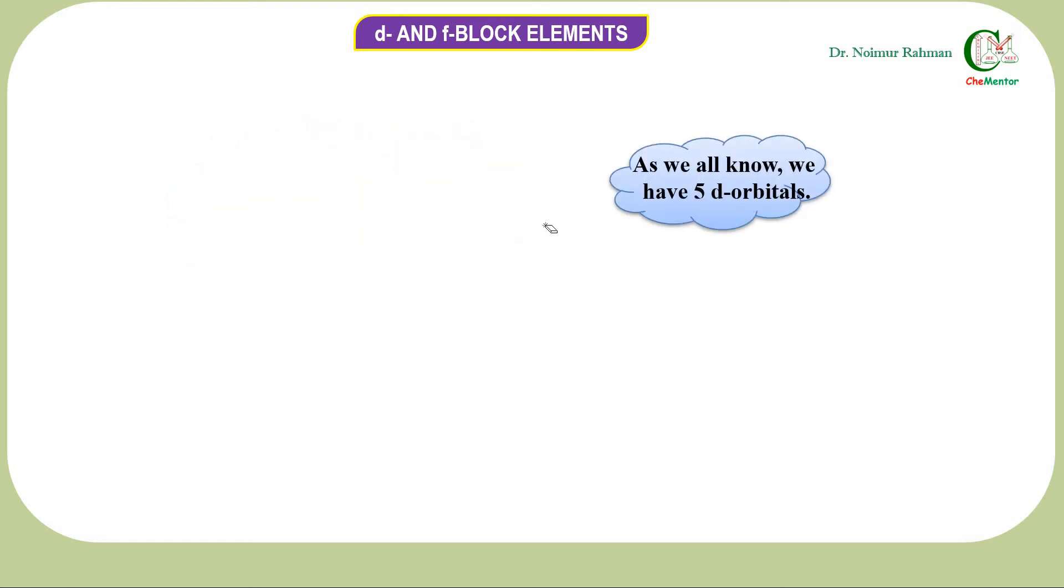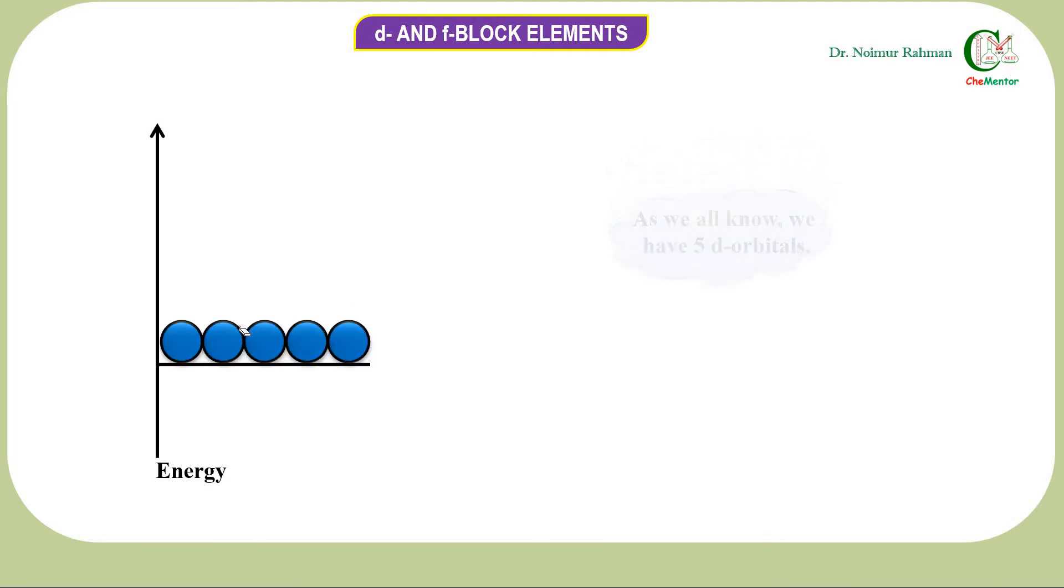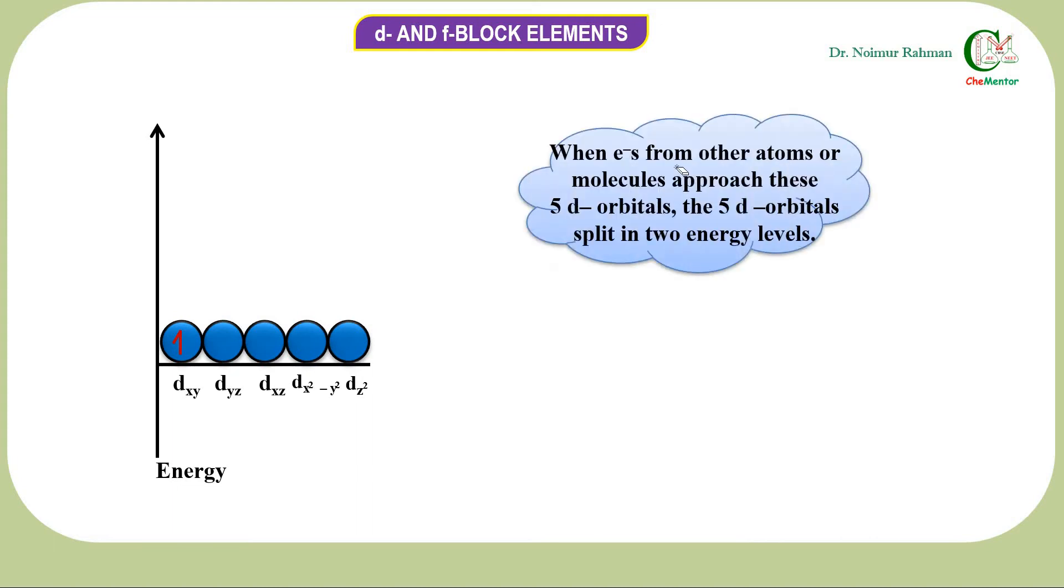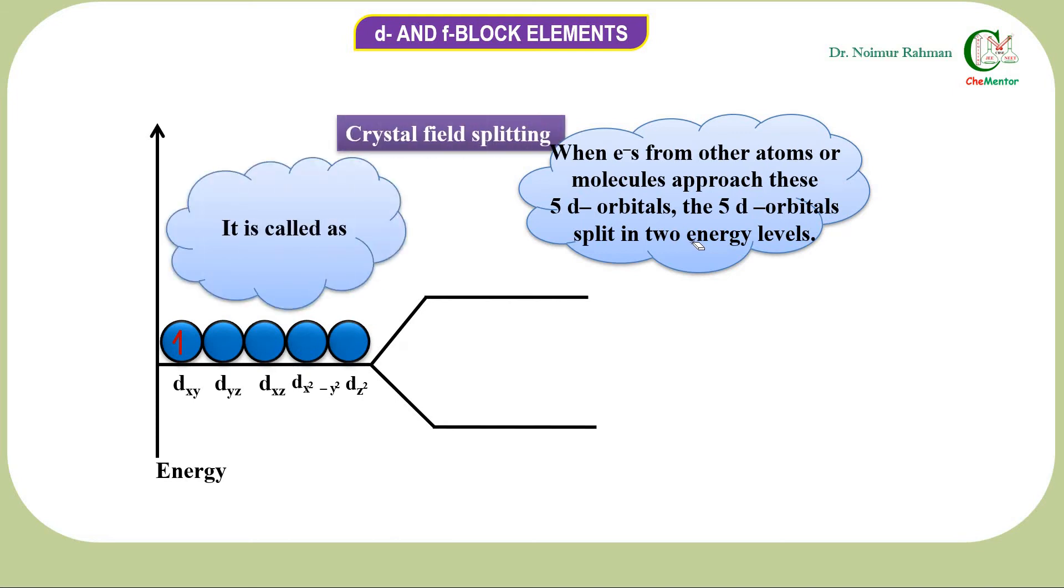The next theory that came up considered a totally new concept. As we all know, we have 5 d orbitals. Metals are having 5 d orbitals with the same energy, called degenerate energy level. When electrons from atoms or molecules approach these 5 d orbitals, they split into two energy levels. It is called crystal field splitting.